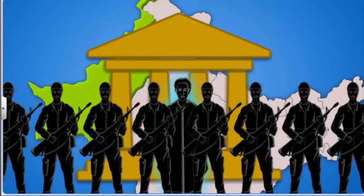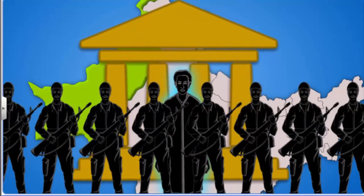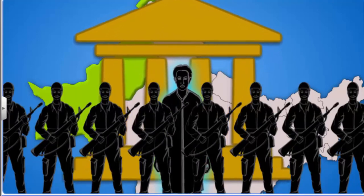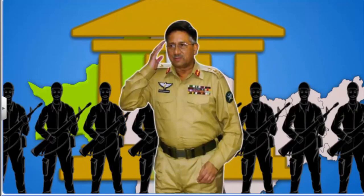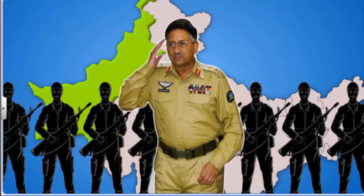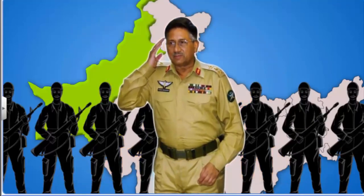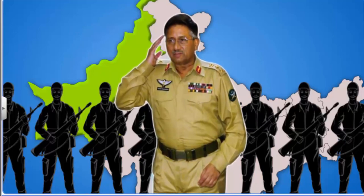However, the work of the civilian cabinet was supervised by a national security council dominated by military officers. The military officers and General Musharraf himself had the power to override any decisions made by the civilian cabinet. Thus, the elected representatives were not the real rulers of Pakistan.